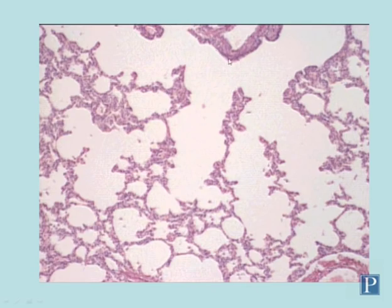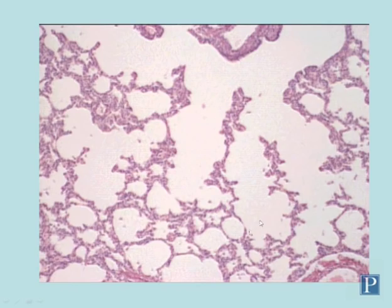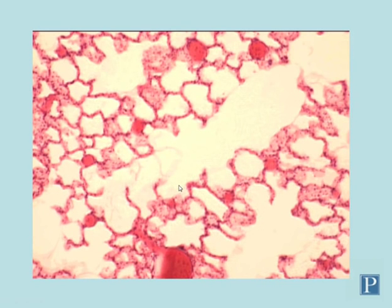Here is a bit of terminal bronchiole with columnar epithelium, branching off into respiratory bronchioles. Here we have some alveolar ducts where the walls are composed mostly of alveoli. You can tell these are alveolar ducts because they terminate in blind alveolar sacs. Here's an alveolar duct terminating into an alveolar sac, another duct terminating into an alveolar sac, and another one here.